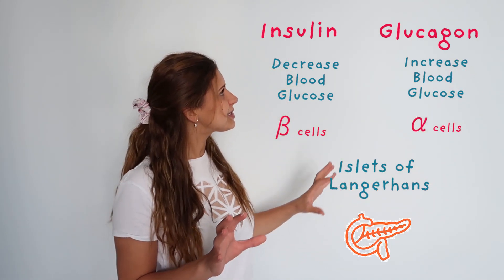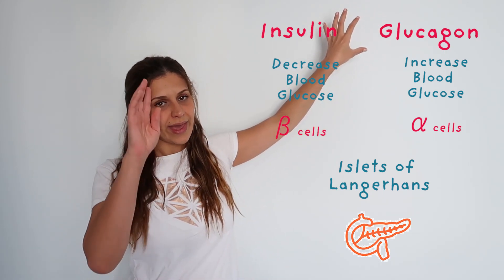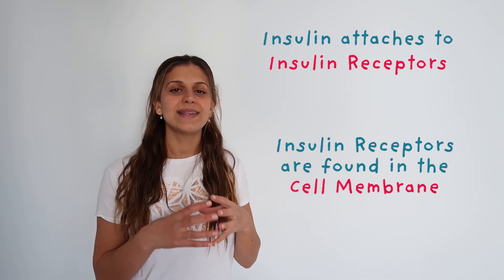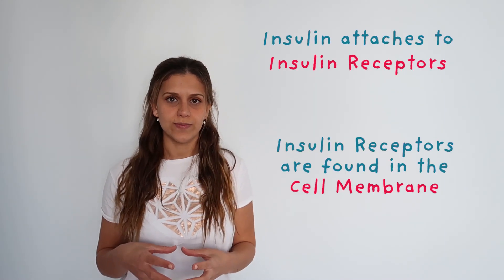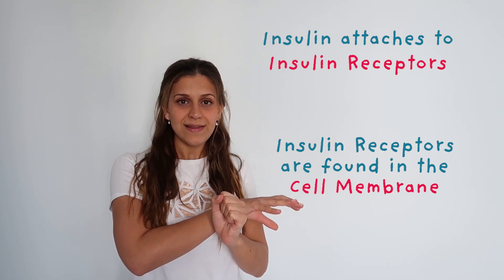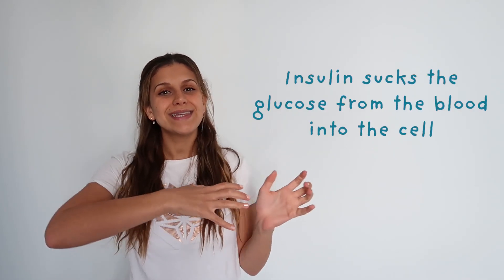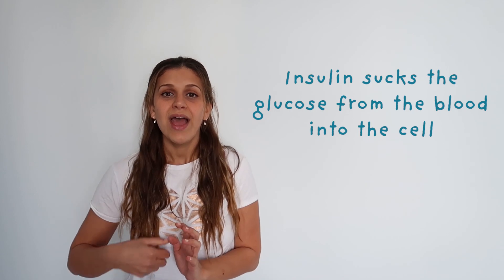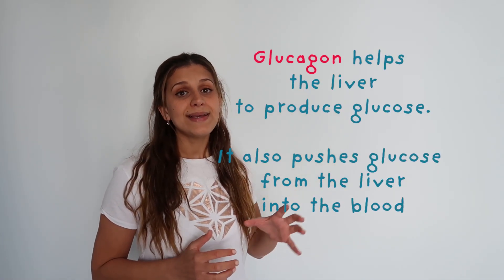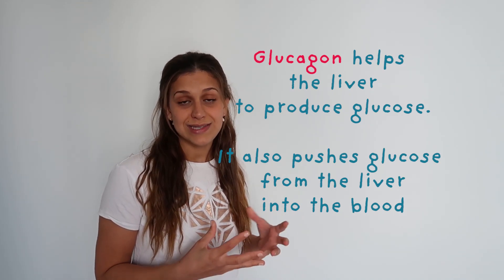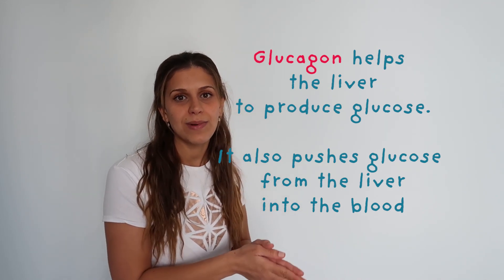The way this happens: when insulin is produced in the pancreas by beta cells, it will attach itself to insulin receptors in the cell membranes of muscles or adipose tissue. When glucose floats in the blood, the insulin will pull the glucose into the cell — removing it from the blood. On the other hand, glucagon basically encourages the liver to produce glucose, and when it is produced, it will push the glucose into the bloodstream.